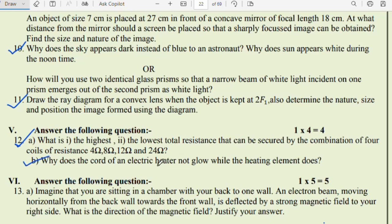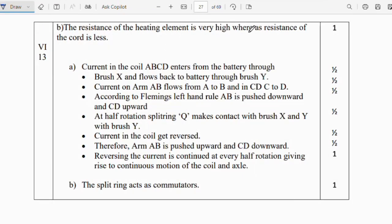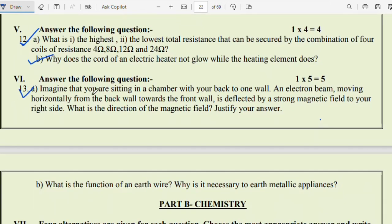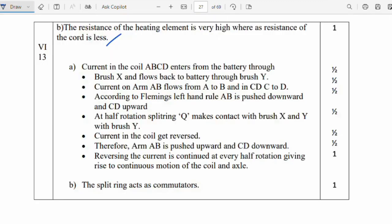Question 13: Imagine that you are sitting in a chamber with your back to one wall. An electron beam moving horizontally from the back wall towards the front wall is deflected by a strong magnetic field to your right side. What is the direction of the magnetic field? Justify your answer. Question B: What is the function of an earth wire? Why is it necessary to earth metallic appliances? Complete answers are given. Video pause and practice. Next question, how does the cord of an electric heater not glow while the heating element does? The resistance of the heating element is very high whereas the resistance of the cord is less.